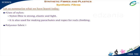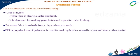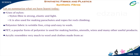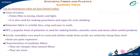Polyester fabric is wrinkle-free, crisp and easy to wash. PET, a popular form of polyester, is used for making bottles, utensils, wires and many other useful products. Acrylic resembles very much to wool and clothes made from acrylic are relatively cheap compared to wool, which is quite expensive. The characteristics of synthetic fibers are: they are cheaper than natural fibers, they are stronger and more durable, and it is easy to maintain and wash synthetic fibers.